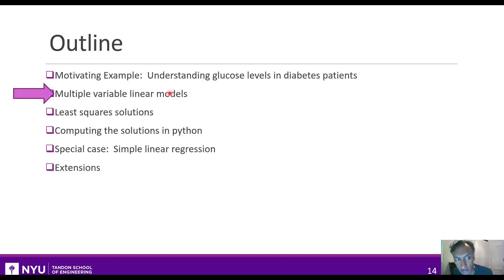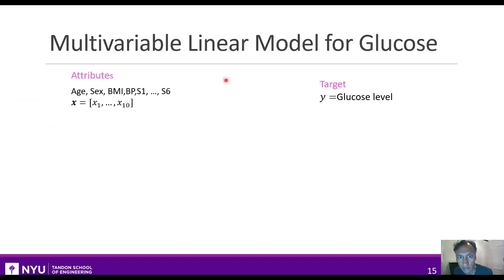Let's mathematically define what we mean by a multiple variable linear model and see how it applies to our glucose problem. If you recall from the last section, our glucose problem is this: we have 10 attributes of each sample, such as the age, sex, and some blood measurements.